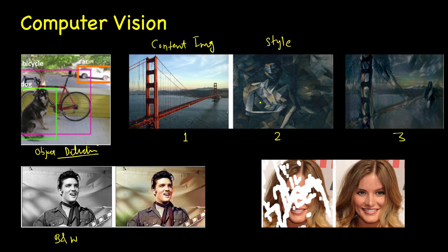Every painter has a style of painting, and similarly different images have both a style and some content. Even if you draw the Golden Gate Bridge as a pencil sketch, it still represents the same content. You can represent the same content in multiple styles. You provide a style image and a content image to a deep neural network and train it to combine them — borrowing the style from one and the content from the other — generating an output image that roughly represents the Golden Gate Bridge in that painter's style.